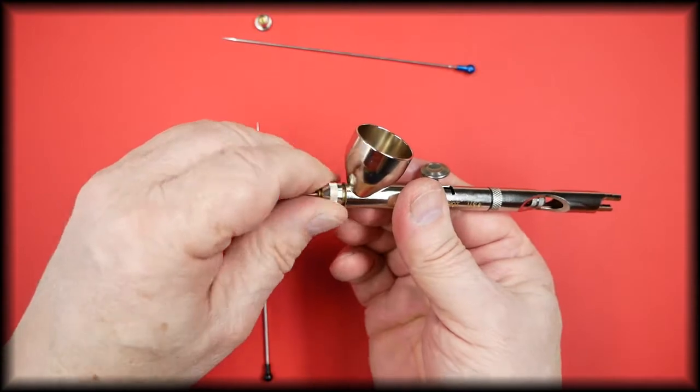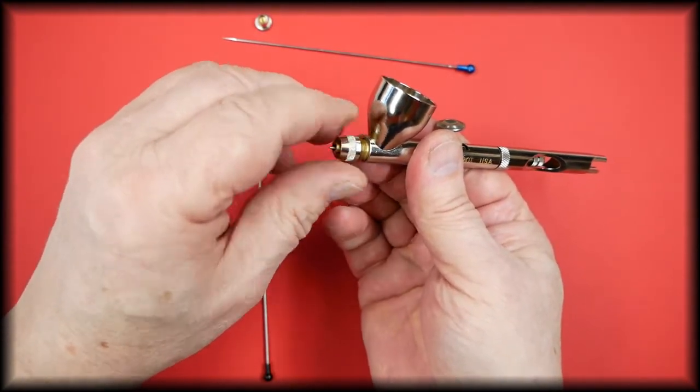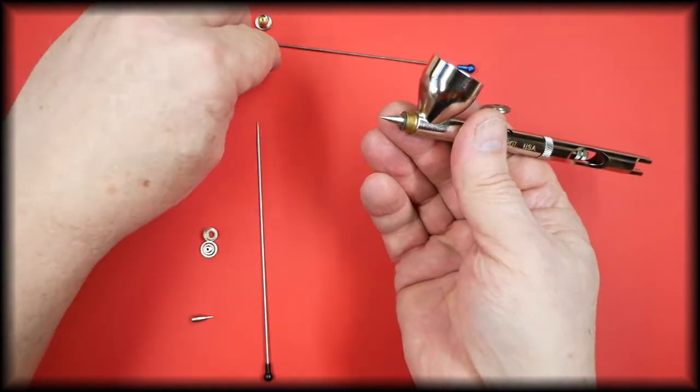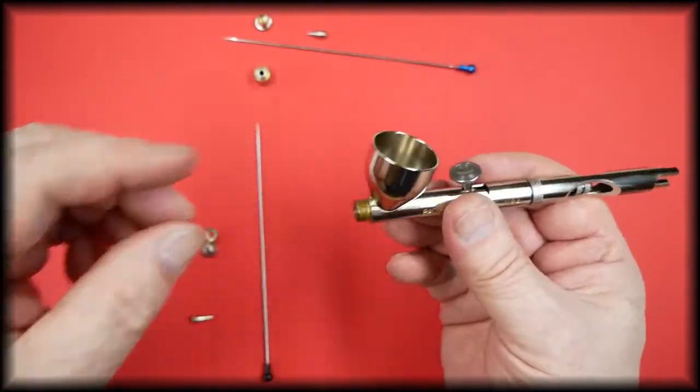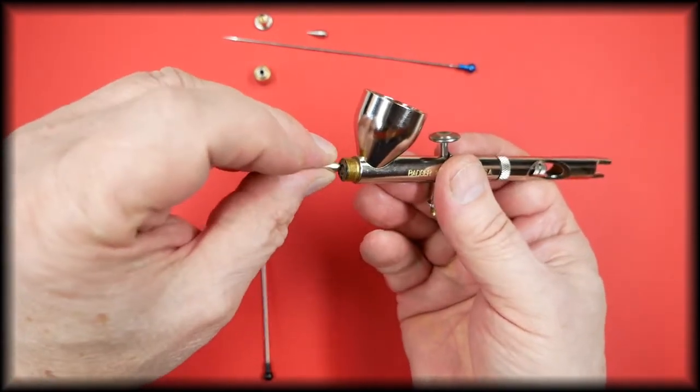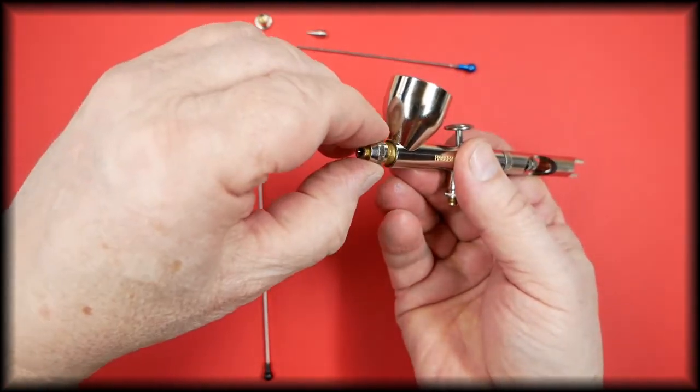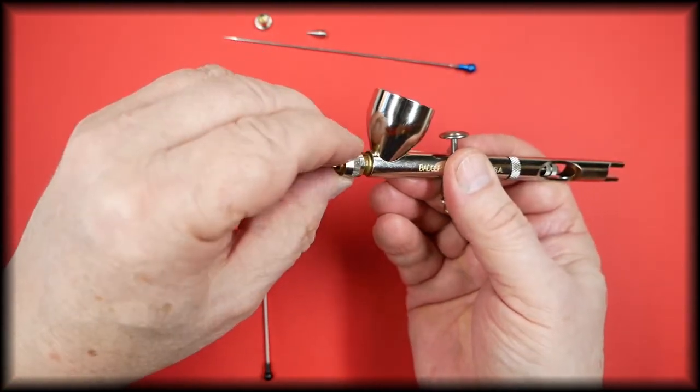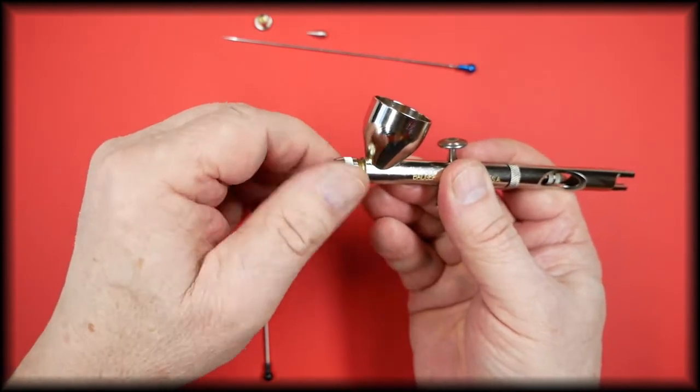Remove the tip. We will then place the new tip, which is the point three tip, onto the airbrush. Place the head back into place being careful of the threads.